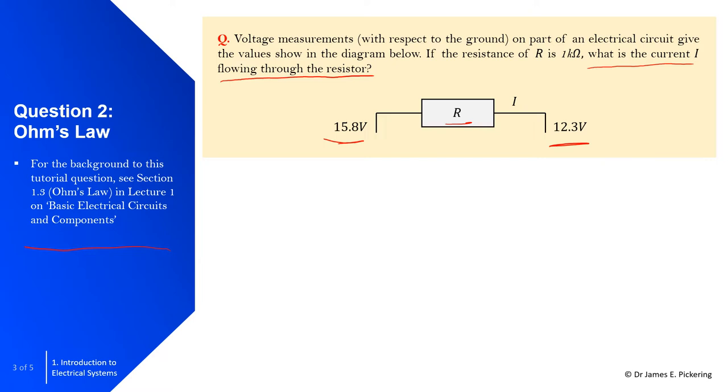If you recall, the Ohm's law equation is given by I, which denotes current, equals V, which is your voltage, over your resistor value R. In this case, we've got a voltage difference, so we need to take that into account for the voltage value. So it's 15.8 take away 12.3 over the resistor value, which in this case is one kilohm.